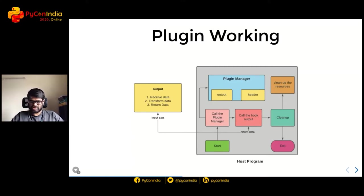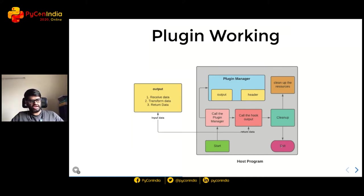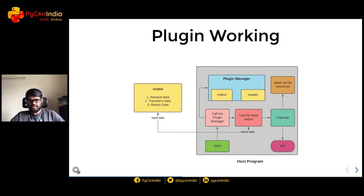Once at runtime the host program decides to call the registered plugins, those hooks get called. The hook receives the data, acts on it, and can return data — returning is optional but receiving is mandatory. Once the hook completes its functionality, execution comes back to the host program, some cleanup happens, and the program exits. Importantly, everything runs in a single process space — even if the plugins are a different code base, they act in a single process namespace and work like an internal library.